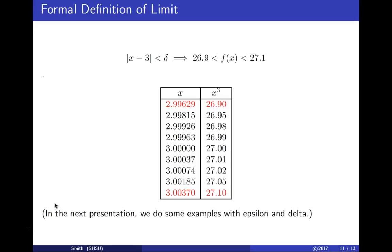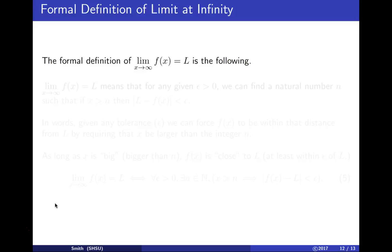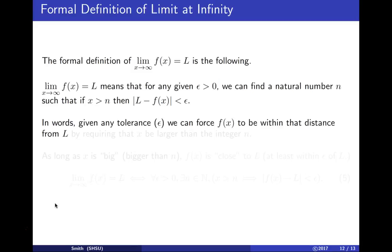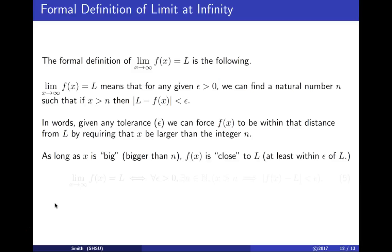In some later presentations we'll do examples with epsilon and delta, but let me finish by looking at the formal definition of a limit at infinity. If we have the limit as x approaches infinity of f of x equals L, this means that for any tolerance epsilon greater than 0, we can find a natural number n — think of this as a big natural number — so that as long as x is beyond n, bigger than n, the distance from L to f of x is less than epsilon. In words, given any tolerance, we can force f of x to be within that tolerance as long as we make x really large. As long as x is bigger than n, f of x will be close to L, at least within epsilon of L.